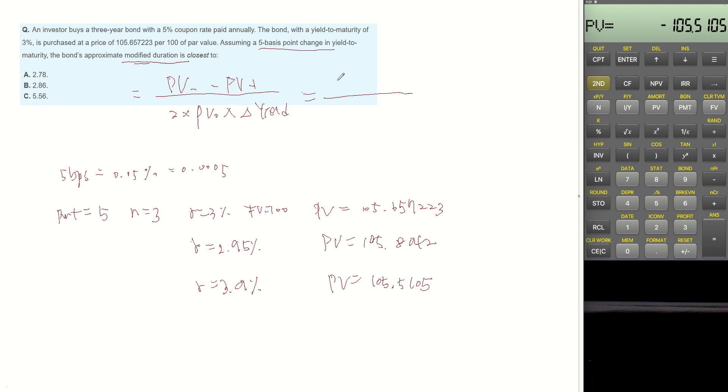Present value when R is 2.95% is 105.8042 minus 105.5105 divided by 2 multiplied by 105.657223 multiplied by 0.0005. This becomes 0.2937 divided by 0.1057, which becomes 2.7797.